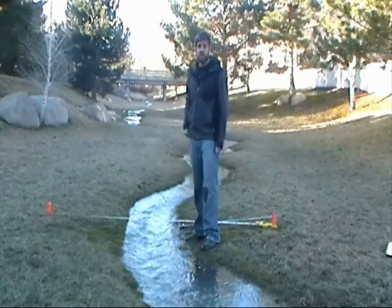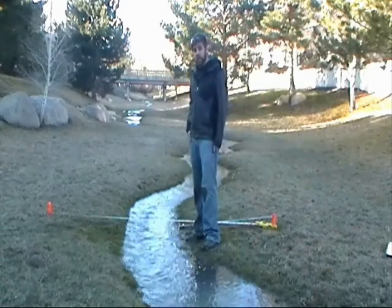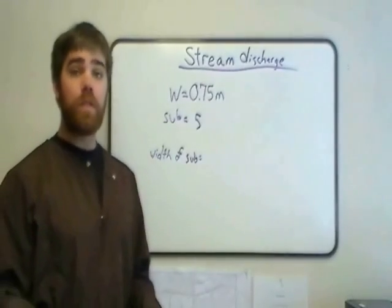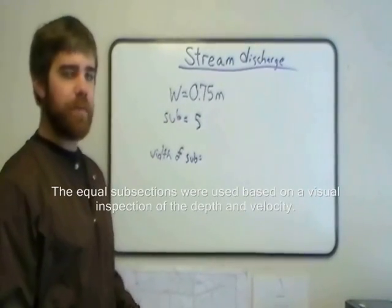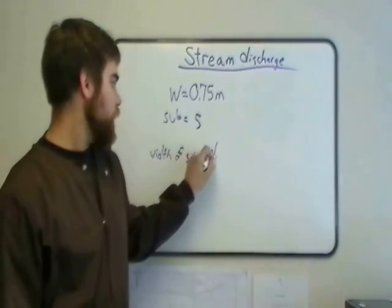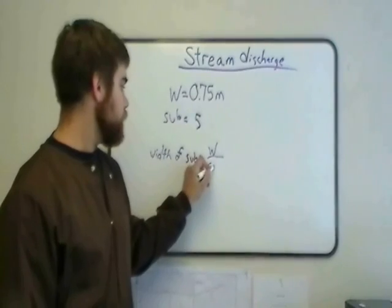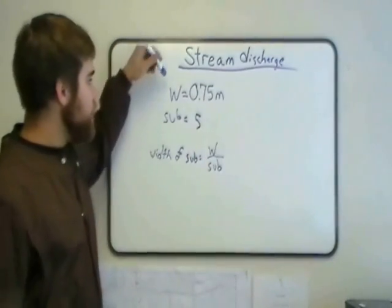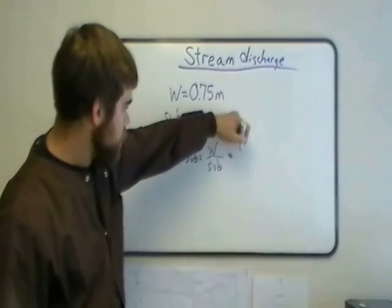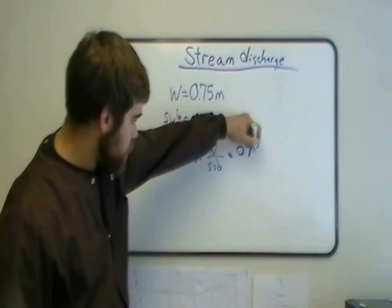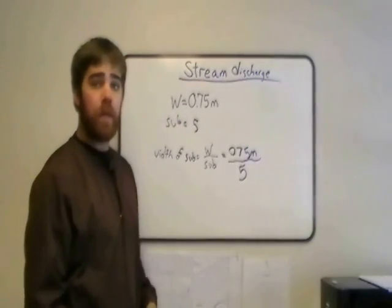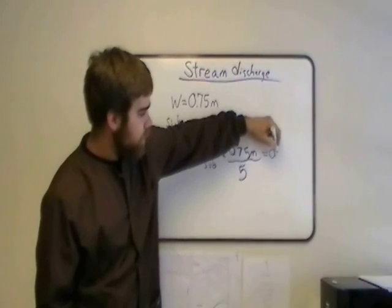To measure the discharge, we are going to divide the stream into five equal subsections. To find the width of each subsection, you take the total width of the stream and divide it by the number of subsections. In our case, the stream width is 0.75 meters divided by five subsections, giving us a subsection width of 0.15 meters each.